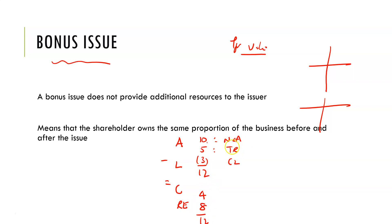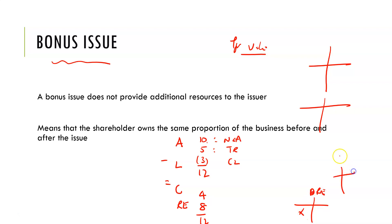Now, if you wanted to pay out a dividend, you can't, because you have no cash. What you could do is transfer retained earnings — debit retained earnings and credit ordinary shares. You're literally just transferring reserves from one area to the next.